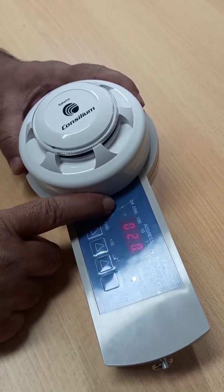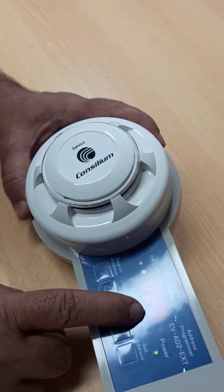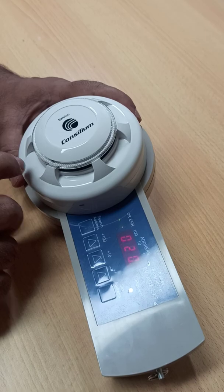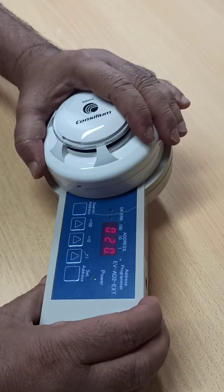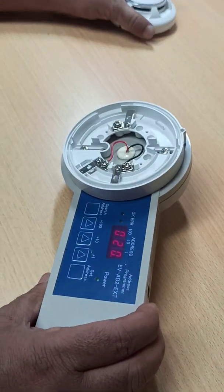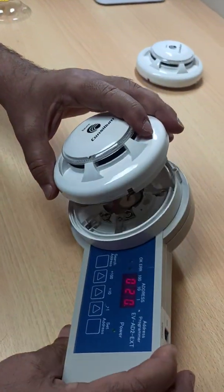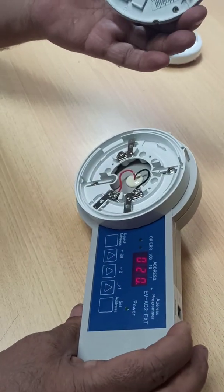Now see, this OK light is glowing and here is showing 20. So this address is set to 20. We'll remove this detector. Now if we have multiple detectors, one by one you can select them. Before that, let's confirm the address.